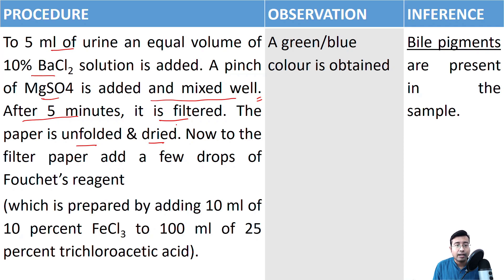And this drying again needs some time. So we need to mix it for 5 minutes, keep it for 5 minutes, then filter. Filtration takes some time and then it is dried. And drying takes a lot of time. Next, we add, when the filter paper has dried, we need to add few drops of Fouchet's reagent. Fouchet's reagent is commercially available. You don't need to prepare Fouchet's reagent.